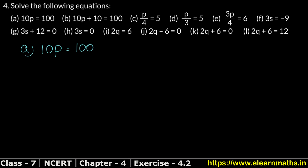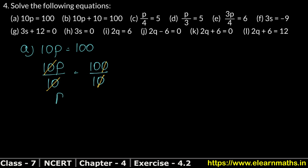Now, what is the variable with 10? p is multiplied by 10. So we divide both sides by 10. We cancel 10 by 10 on the left side. So here we have p, and on the right side we have 10. So p equals 10.